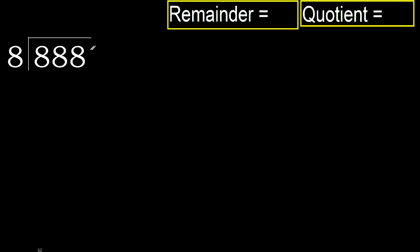888 divided by 8. 8 is not less, therefore we start with 8. 8 multiplied by which number is nearest to 8, but not greater?